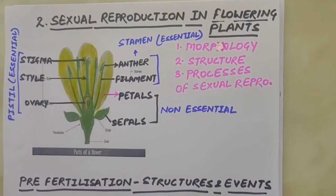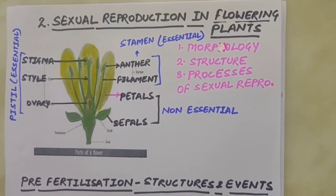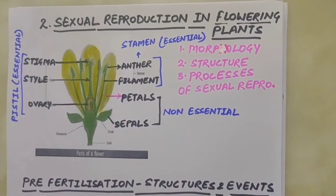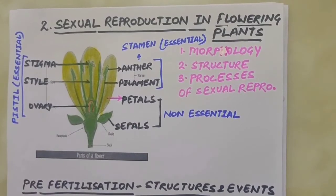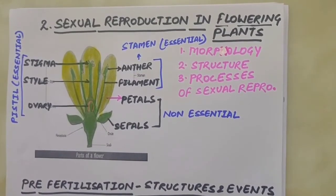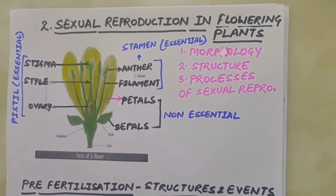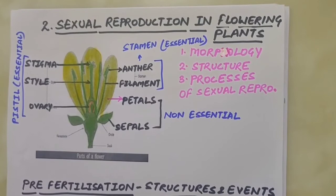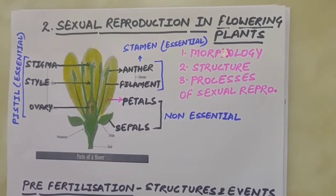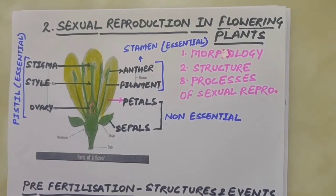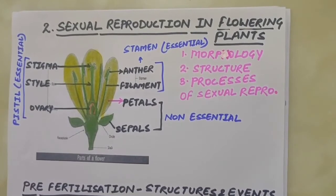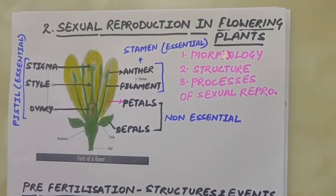Good morning everyone. Today we are going to discuss Chapter 2 of Class 12, that is sexual reproduction in flowering plants. We know that all flowering plants show sexual reproduction. In this chapter, let us understand the morphology, structure and processes of sexual reproduction in flowering plants, that is in angiosperms.